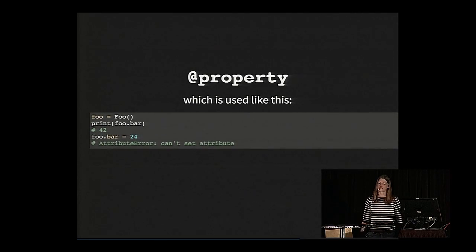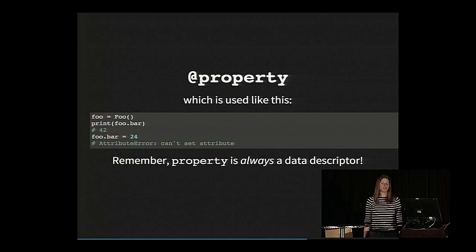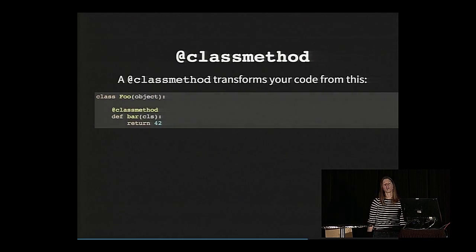So that's essentially what this gets transformed into. Now, when I use this like this, it's really nice because I get to treat it sort of as an attribute. So if it's something that has to be computed on the fly, I can use it that way. But you have to remember, even if you don't set the set method or the delete method, this is always a data descriptor. So it'll always take precedence in that order I showed earlier.